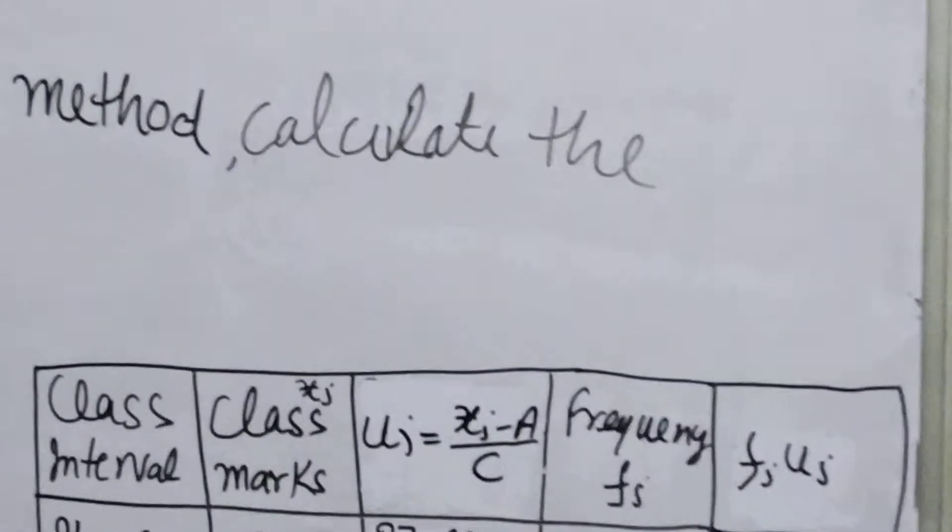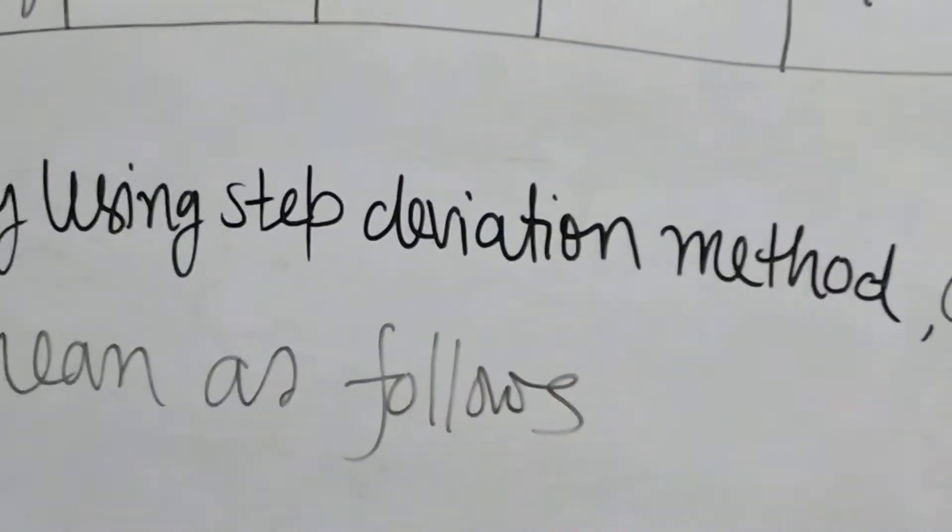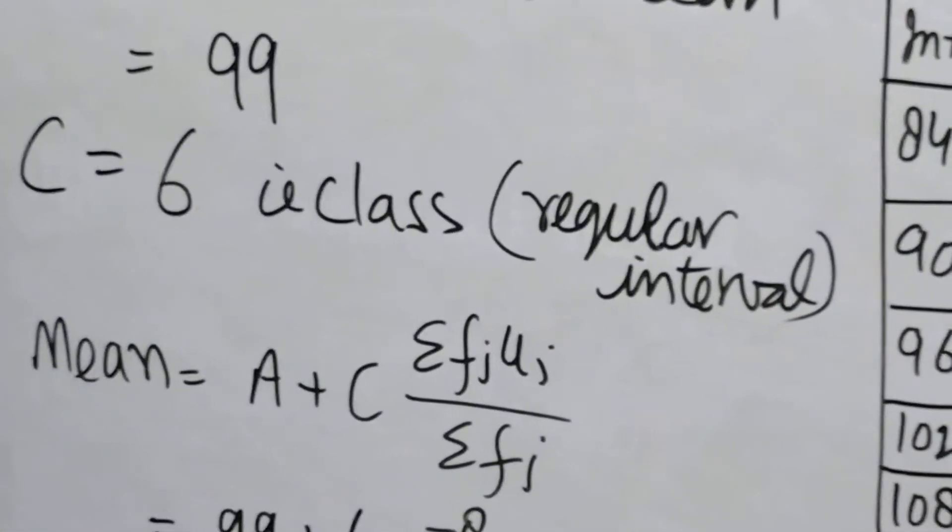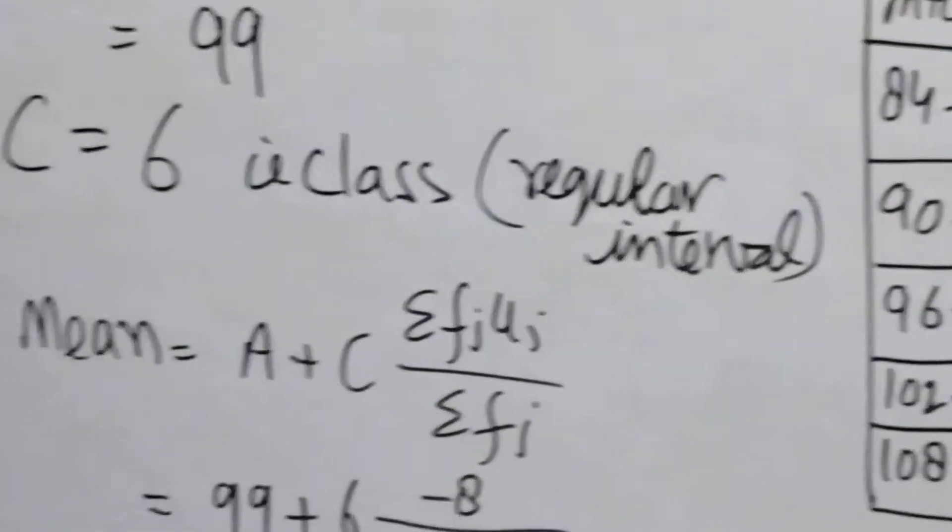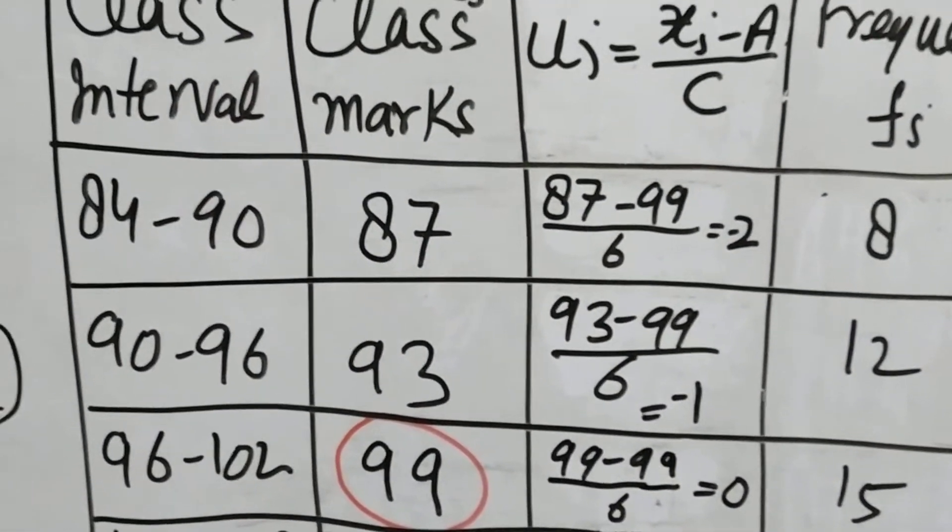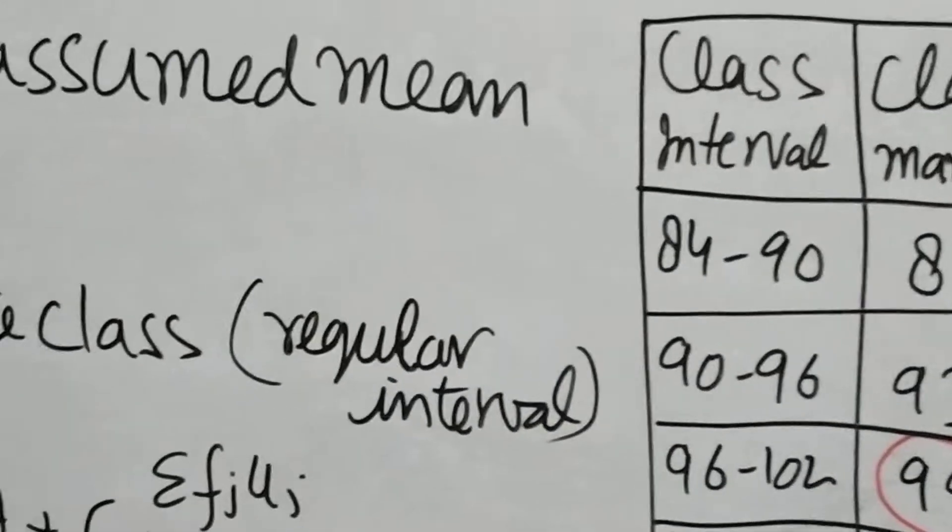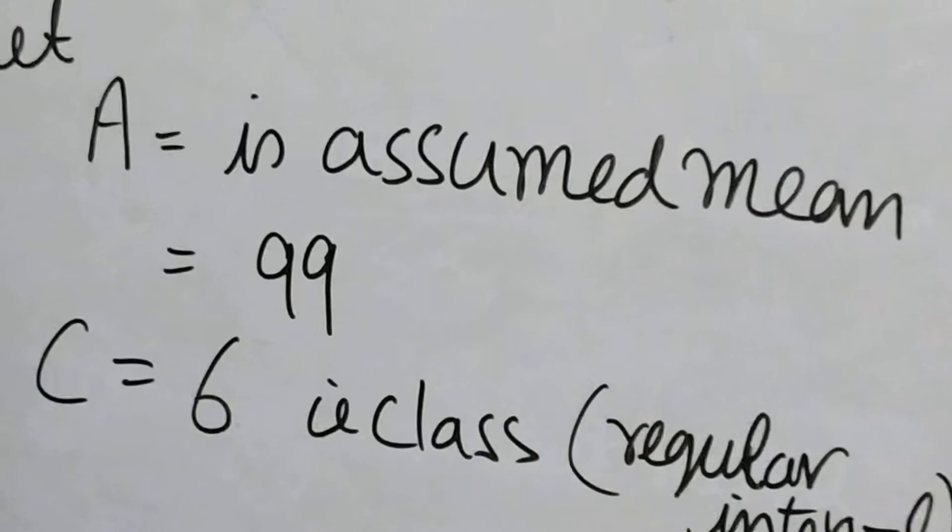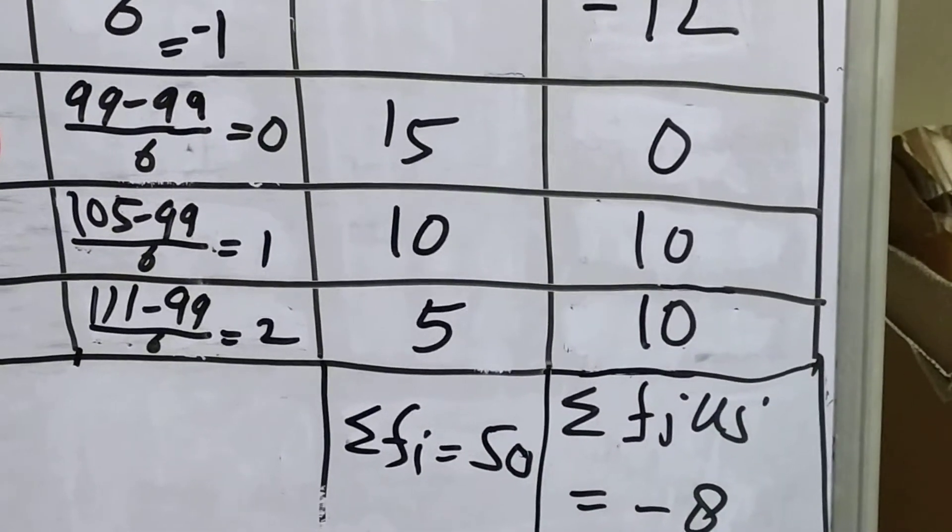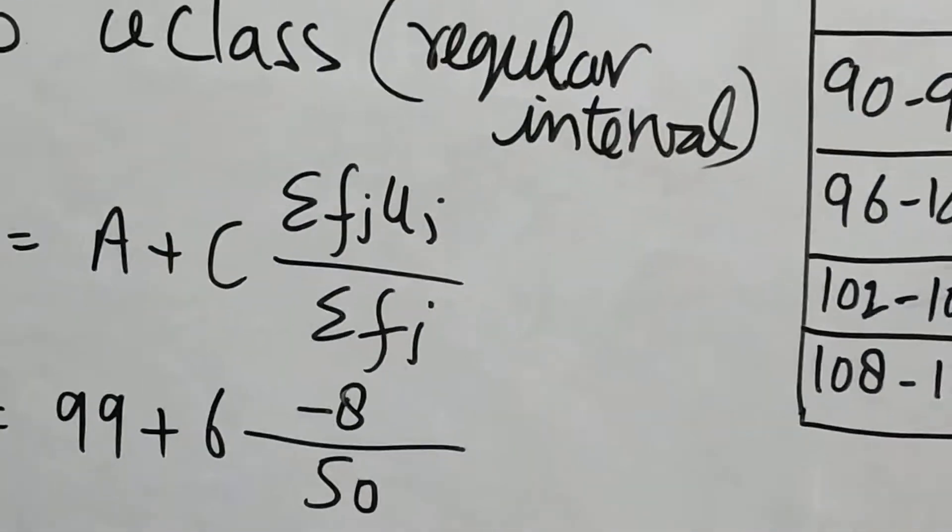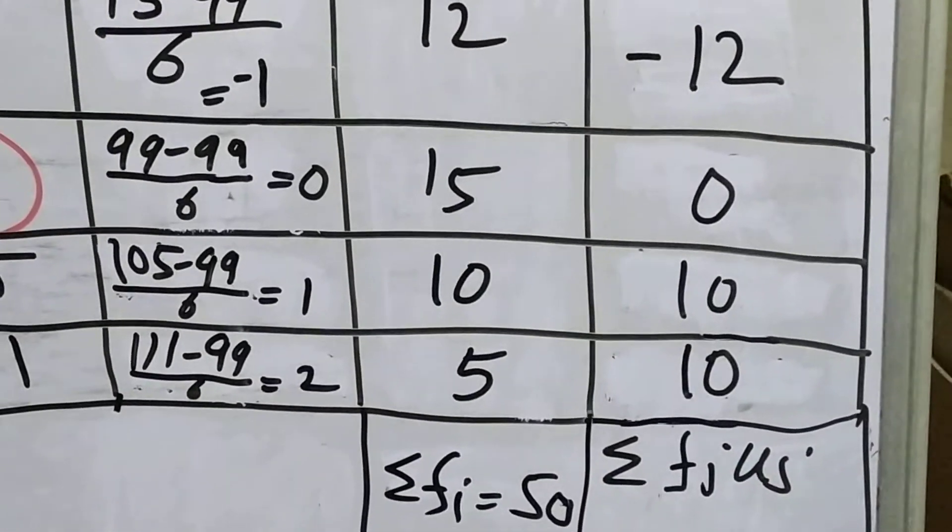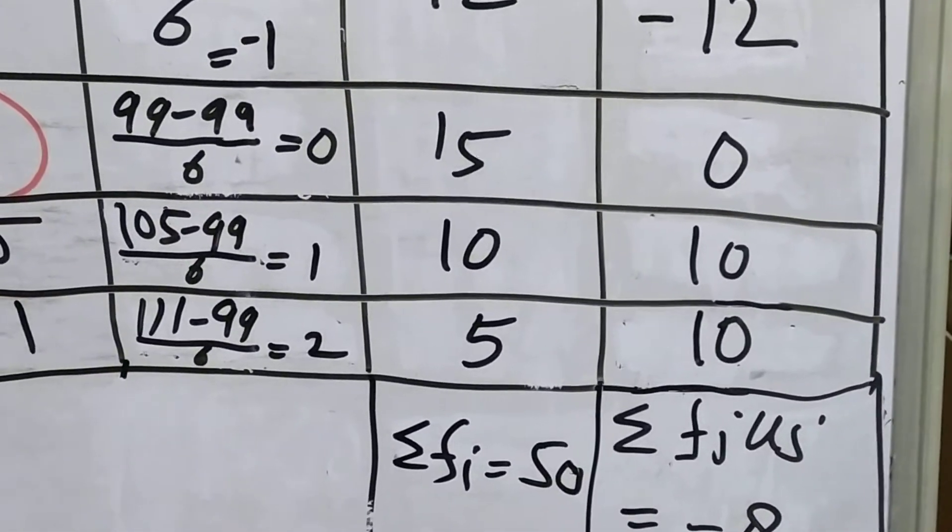Okay, now we have all the values required in the formula: A, C, fi ui, and fi. Put all the values. A is 99 as we have taken, it is encircled by a red pen. Then C, C is taken as 6. Then sigma fi ui, sigma fi ui is minus 8, so we have written minus 8. And sigma fi is 50. This is the frequency column and sigma fi is 50.